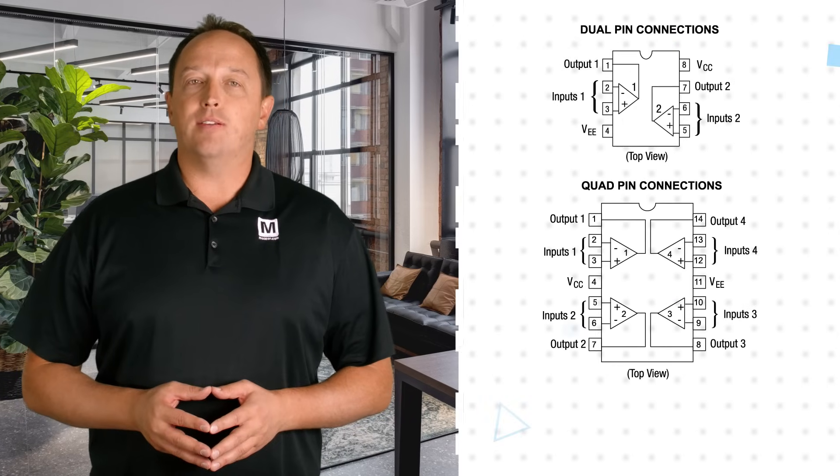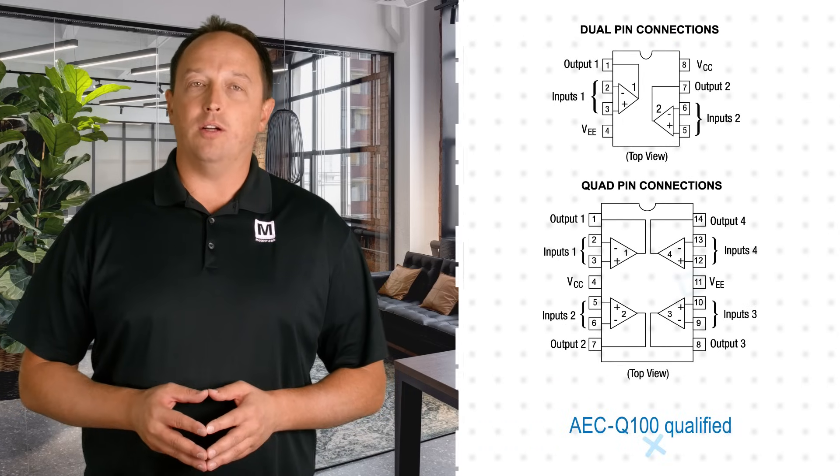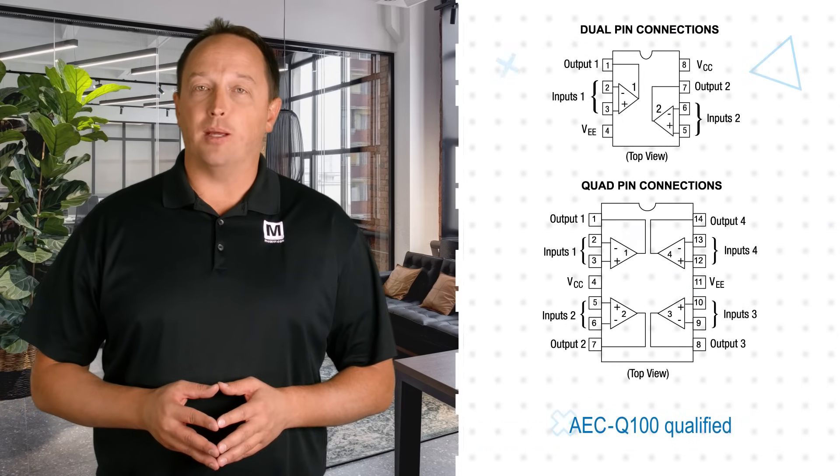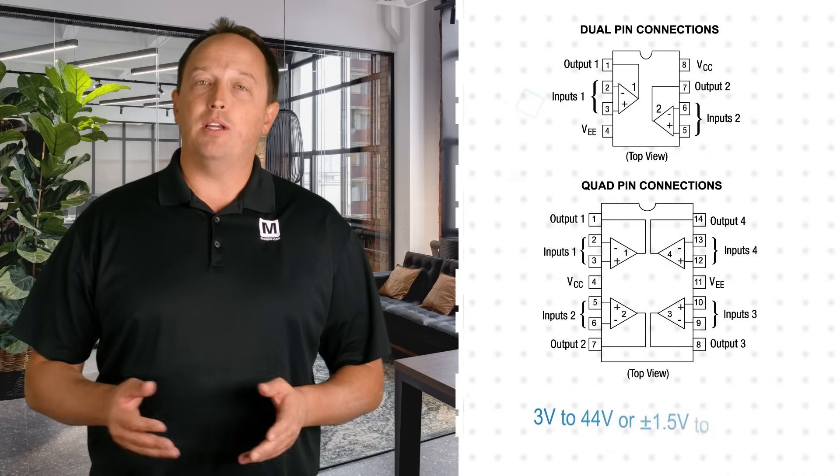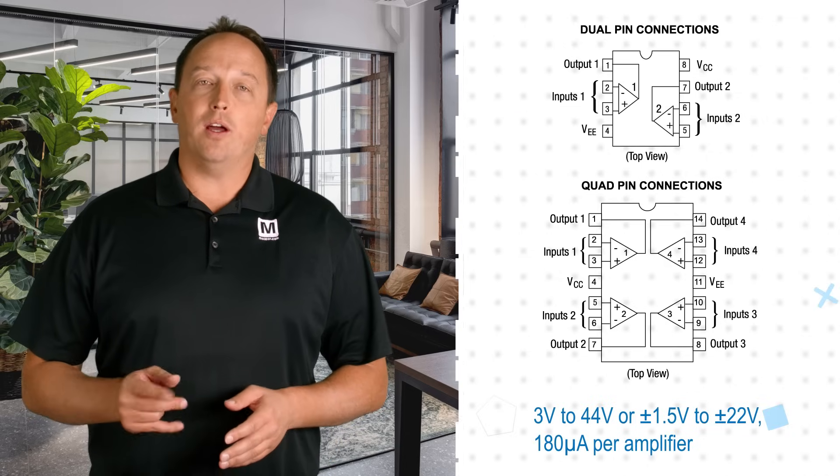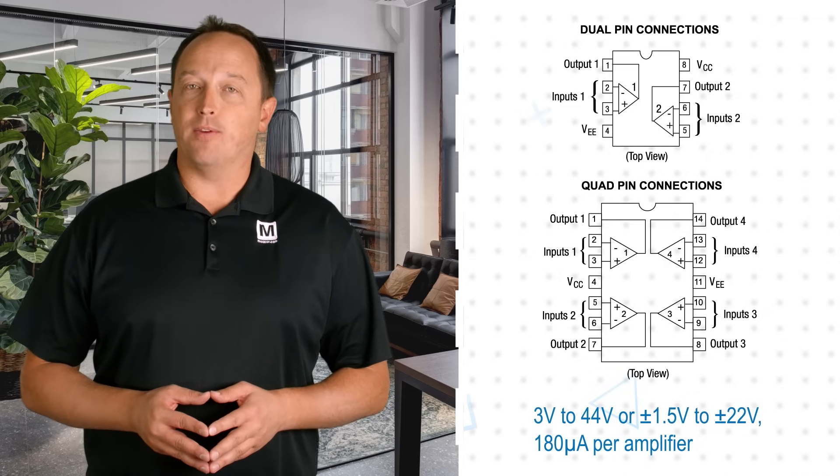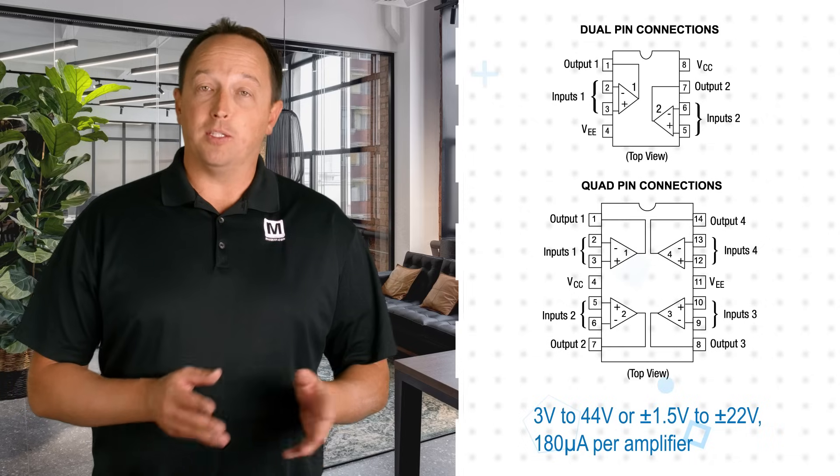The NCV3317 series are AEC Q100 qualified and PPAP capable op-amps designed to operate from a single 3 to 44 volt supply while drawing just 180 microamps per amplifier. They can also operate from a split supply.